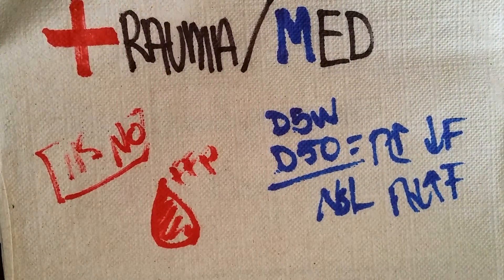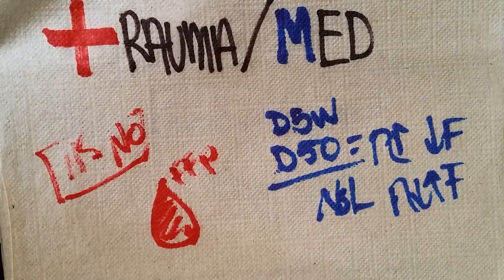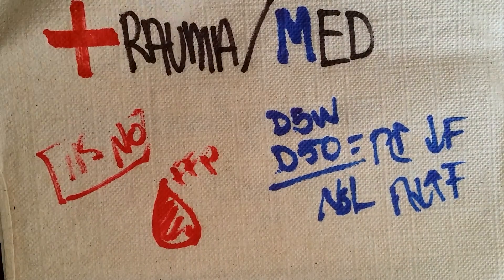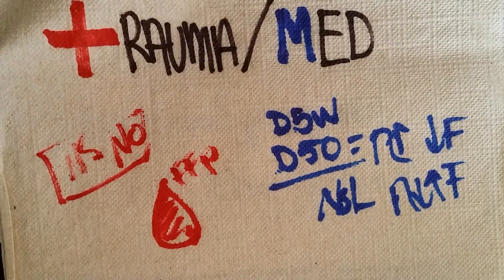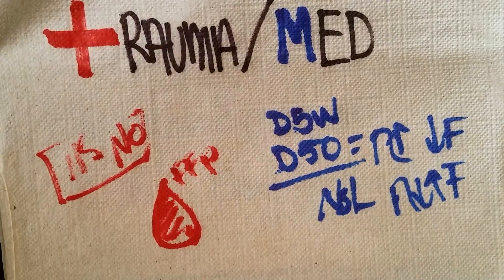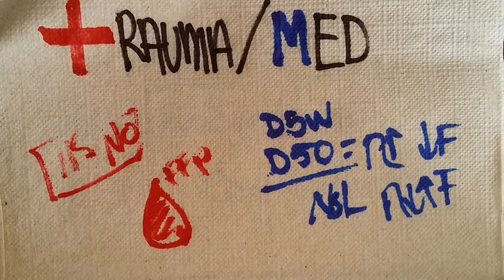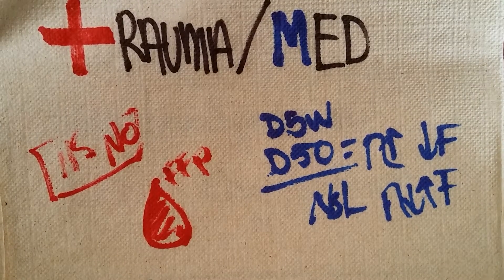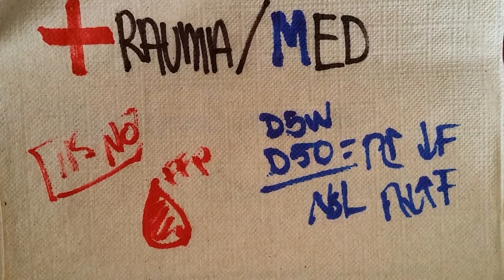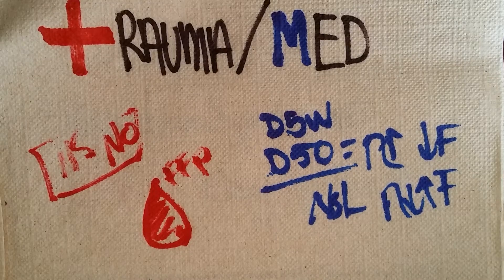These are two examples — a trauma scenario and a medication scenario — illustrating how Poiseuille's equation can affect your patient. On the topic of size: a lot of people say go big or go home, but you need to know what you're doing. Don't fish around inside a vasculature for a large catheter just because you think it's cool. Have a clinical reason for that large catheter.